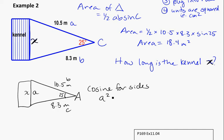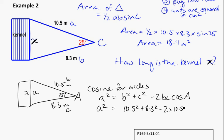But using that information, knowing that my formula for the cosine rule is a² = b² + c² - 2bc cos A. I'm going to find that a² is equal to 10.5² plus 8.3² minus 2 times 10.5 times 8.3 times cos 25.